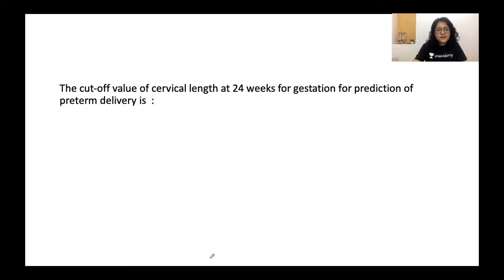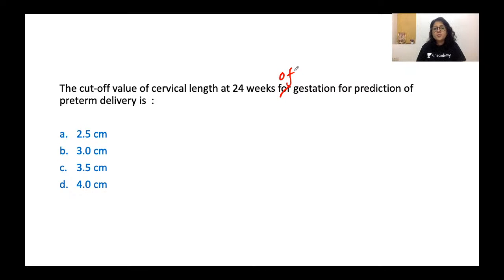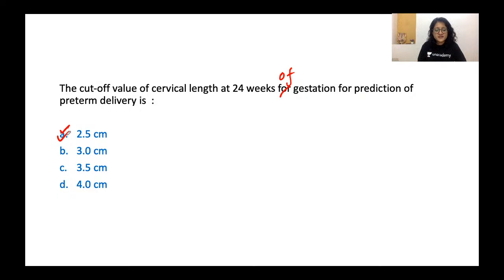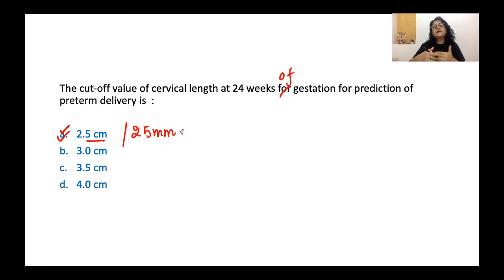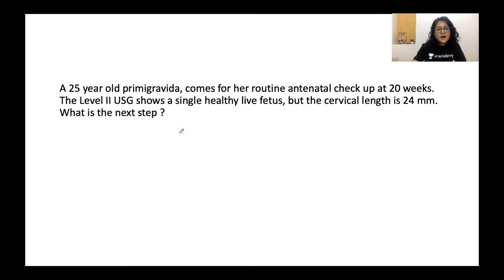The cutoff value of cervical length at 24 weeks of gestation for prediction of preterm delivery is 25 mm — or 2.5 centimeters. If the cervical length at 24 weeks is less than 25 mm, it is predictive of a subsequent risk of preterm delivery.